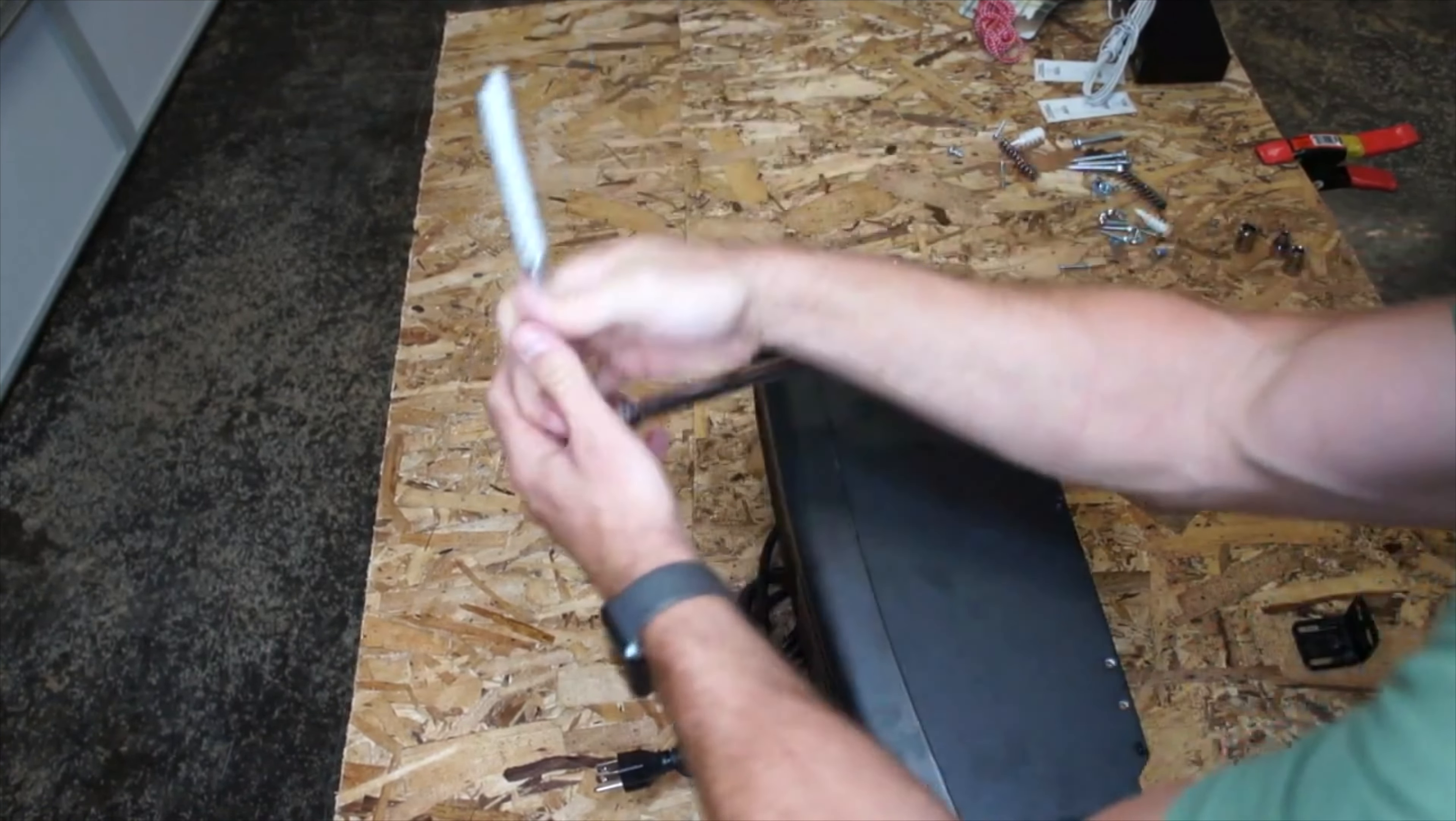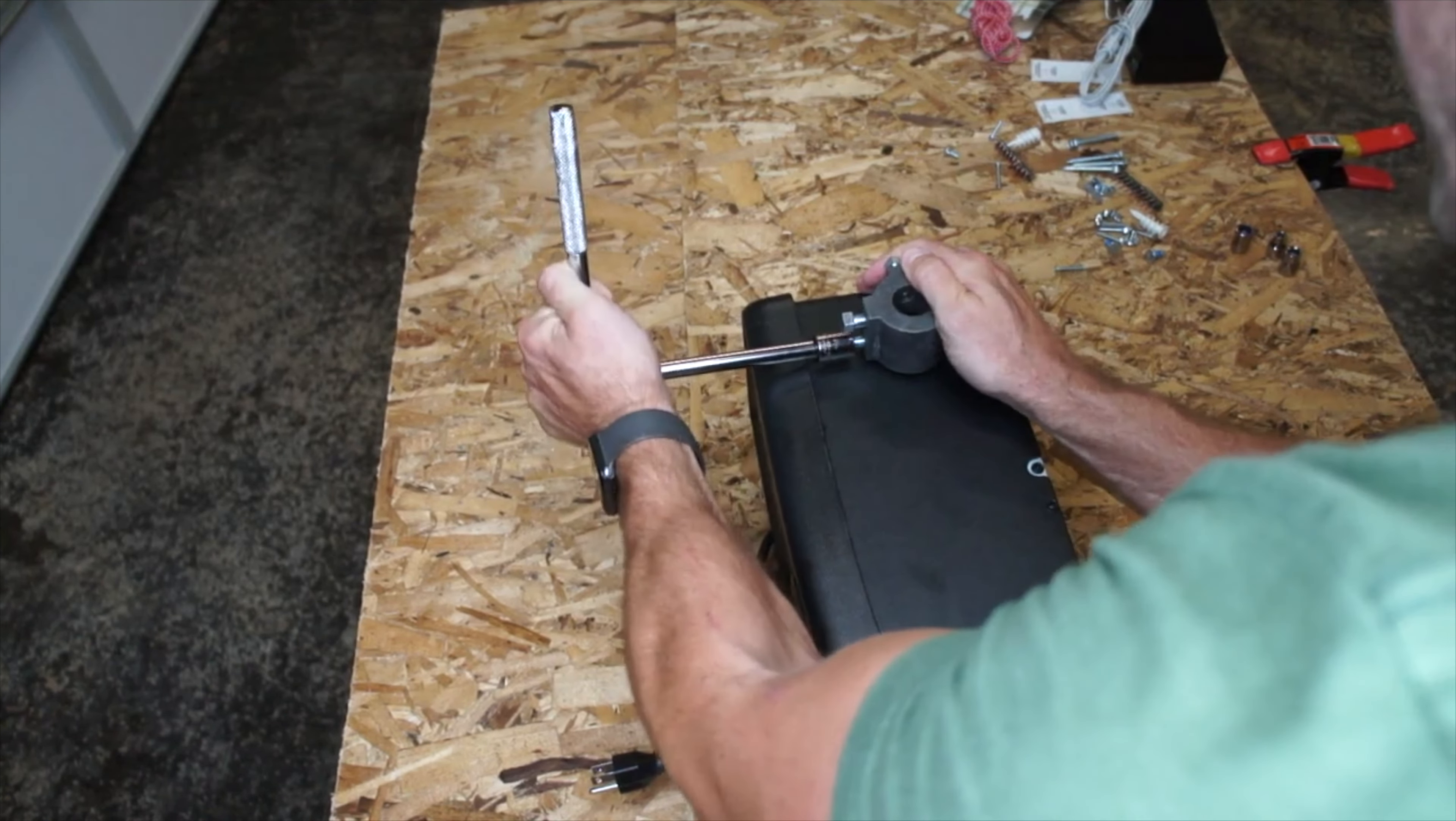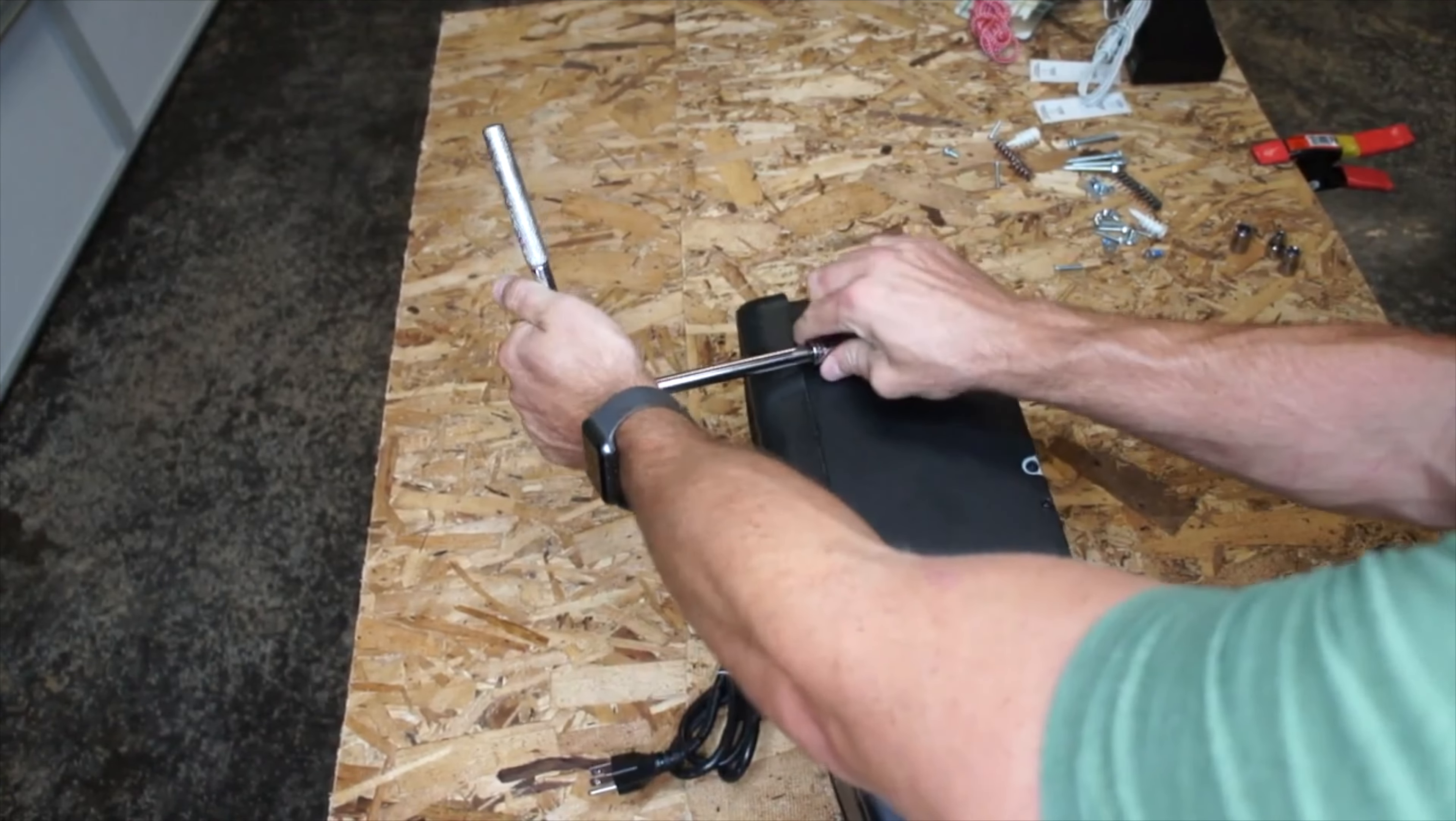And I'm going to use a half-inch ratchet to tighten those down. You just want to kind of get them snug, but I mean fairly tight. It says about a quarter turn.